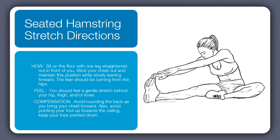For the seated hamstring stretch, you're seated — extend one leg out in front of you and bend the opposite leg in, placing the inside of the foot against the inner thigh. Reach over the straightened leg towards the toes or the shin, feeling a stretch through the hamstring. The hamstrings and the adductors work together here, so it's important to stretch out the hamstrings as well.